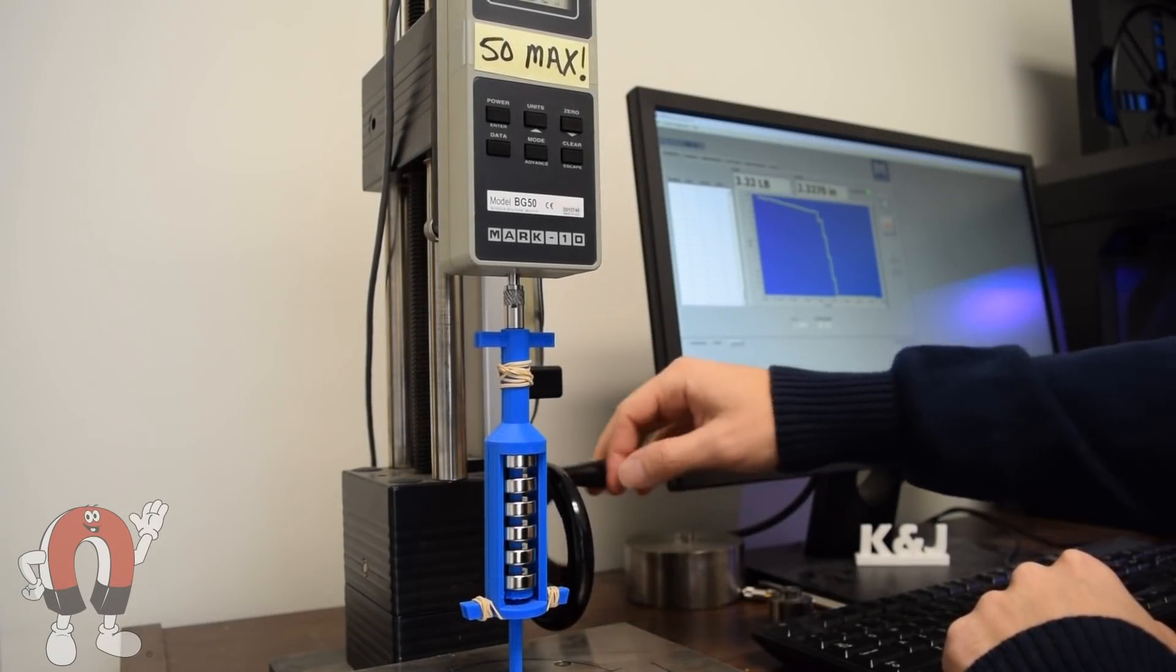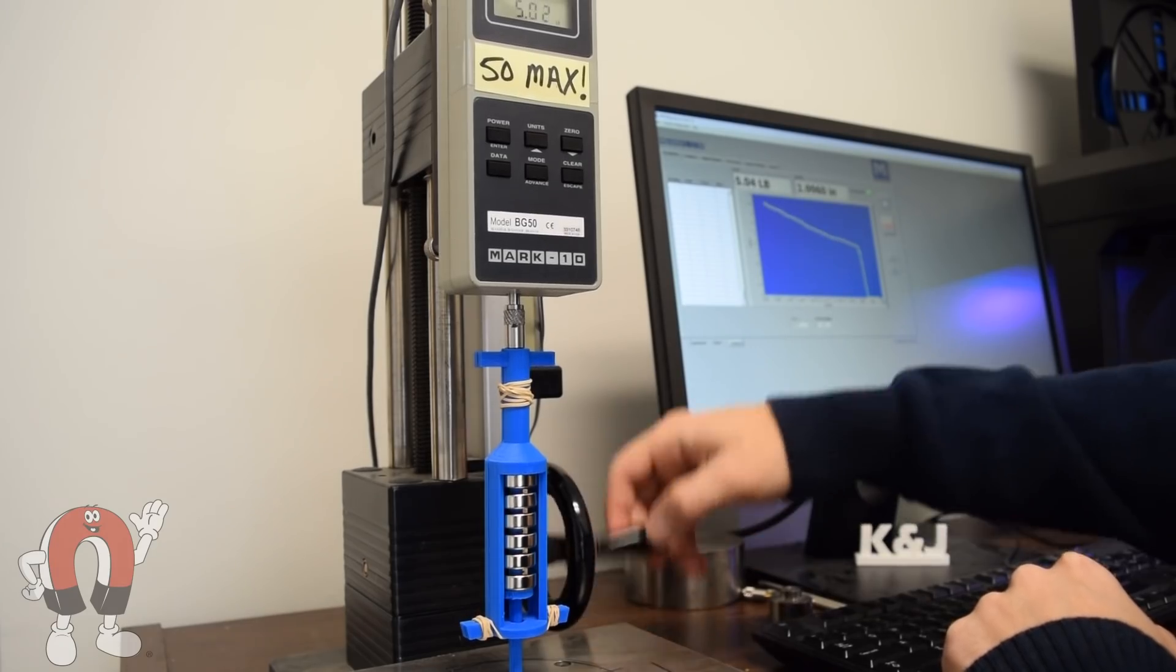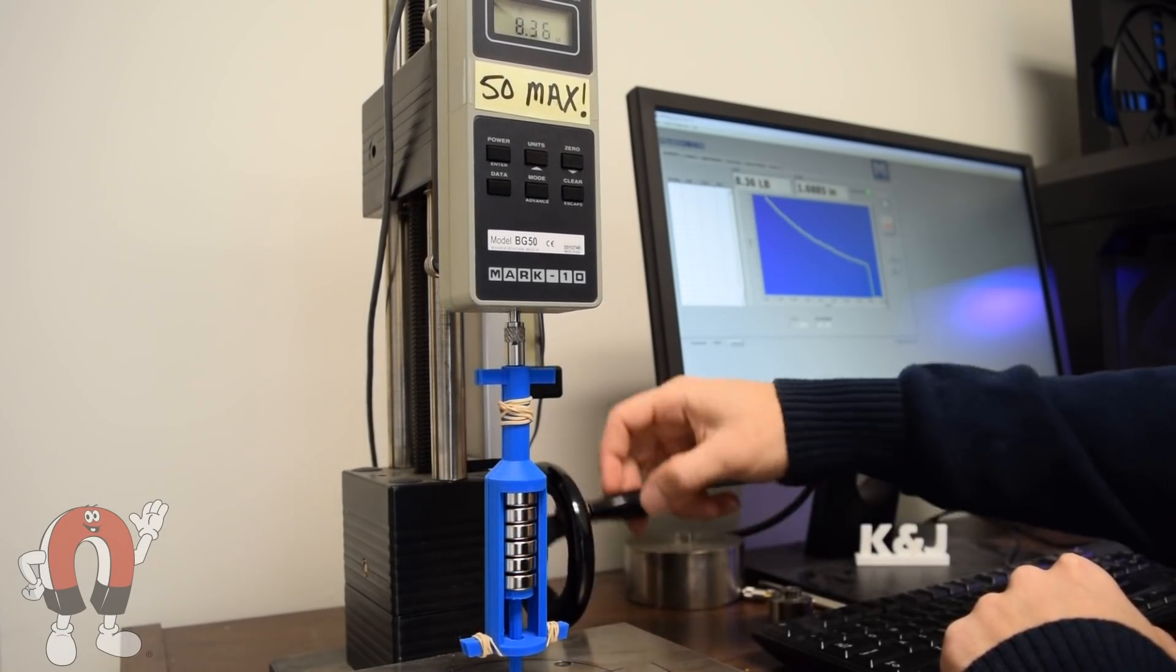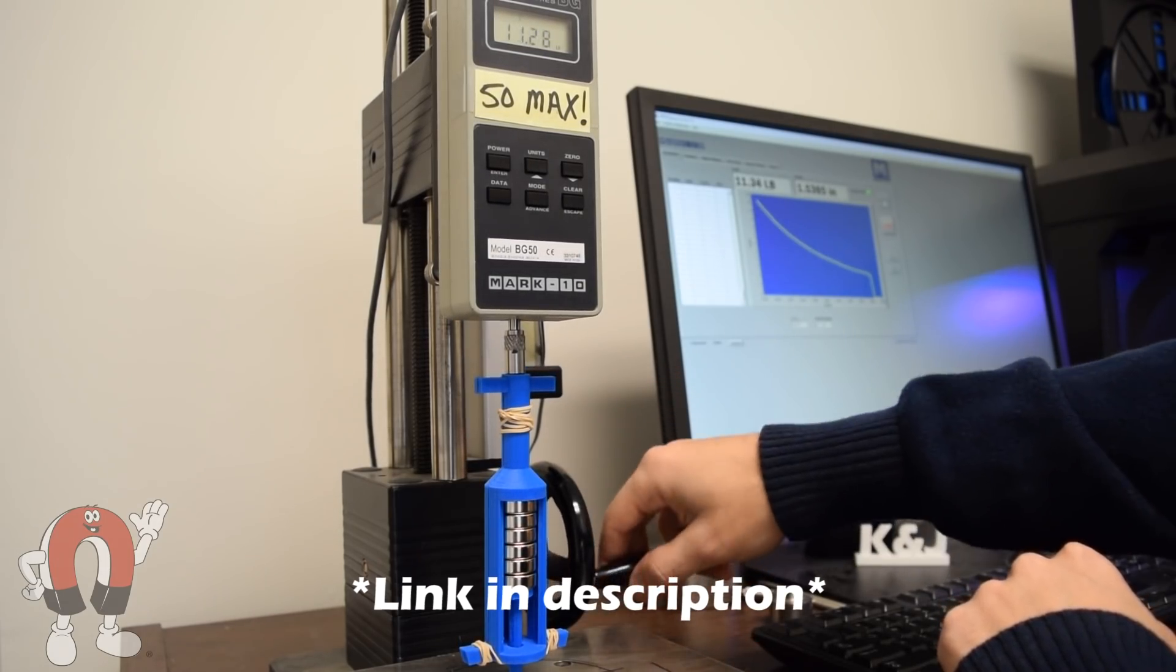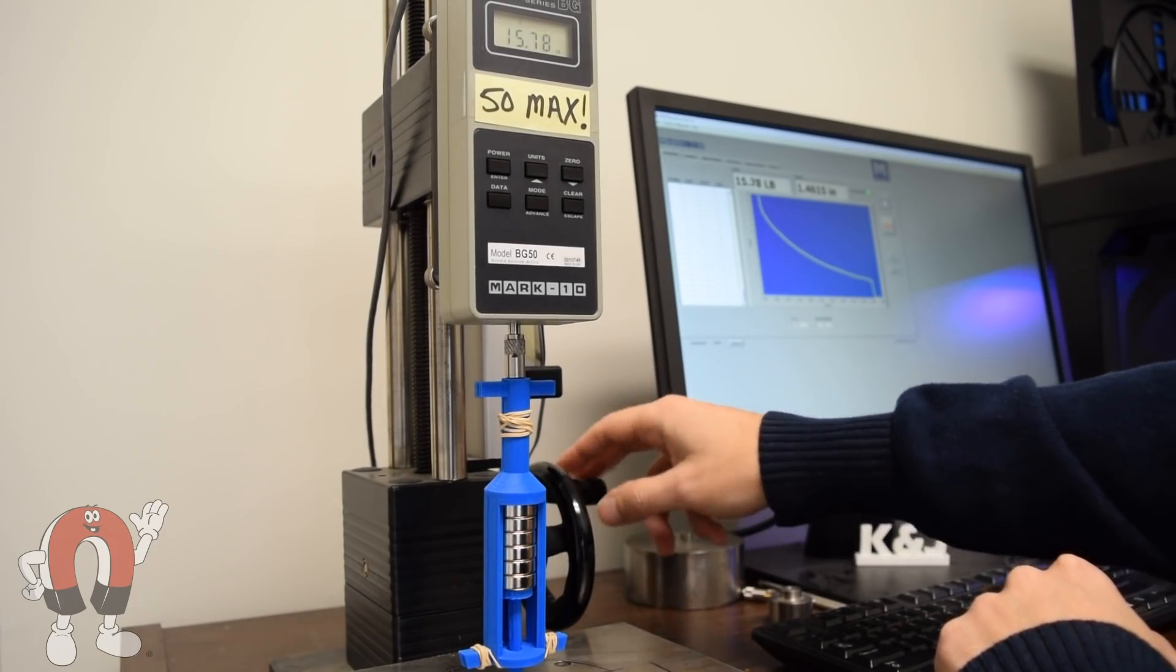This month we're exploring an interesting question. Can you use repelling magnets instead of a spring in a pogo stick? Be sure to check out our blog article for the full details and a bunch of scale model measurements. In this video we're exploring the real thing. A real pogo stick versus some big magnets.